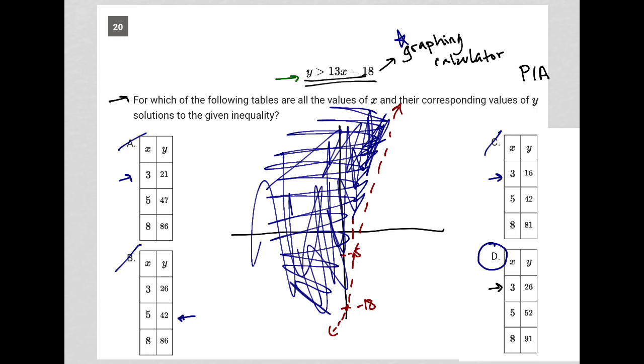For instance, here for choice D, we're told that when X is 3, Y is 26. Well, we can test that. I can replace Y with 26. I can replace X with 3. And when I do that, what I see is that this becomes 26 is greater than 39 minus 18 or 26 is greater than 21, which I can confirm to be mathematically accurate. So I know that that's true.